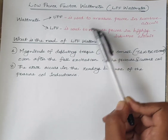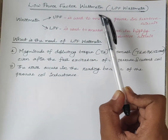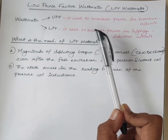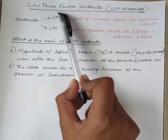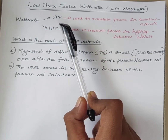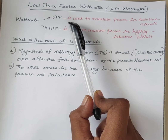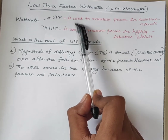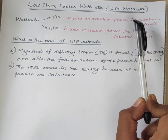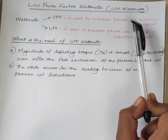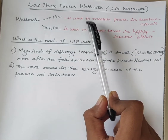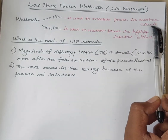Hello students, today we will discuss low power factor watt meter, LPF watt meter. Usually watt meters are classified into two types: UPF type watt meter and LPF watt meter. UPF means unity power factor watt meter. These type of watt meters are used to measure power in resistive circuits, because in a resistive circuit, power factor cos phi is equal to 1.